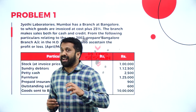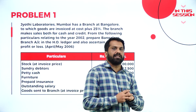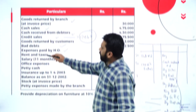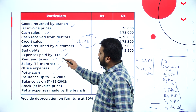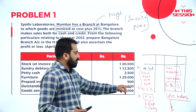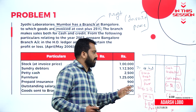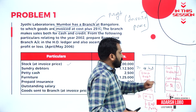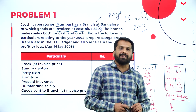Branch stock account, branch debtors account, and branch petty cash account — all three come under branch account. Rent, taxes, salary, and office expenses go to the branch stock debit side: opening balance, goods sent to branch, head office expenses, petty cash. Credit side: cash collected, cash sales, goods returned to branch, along with closing balances.